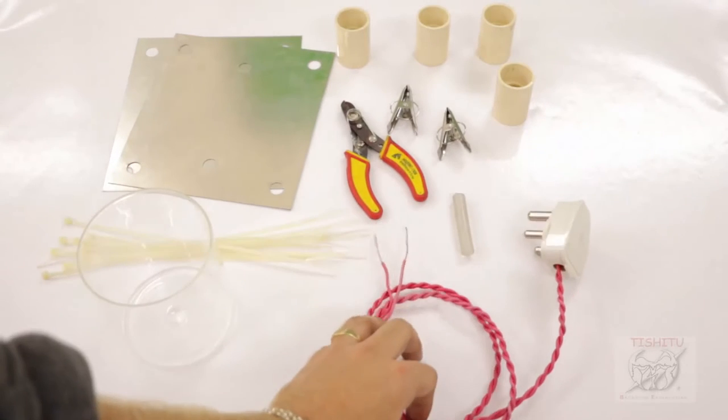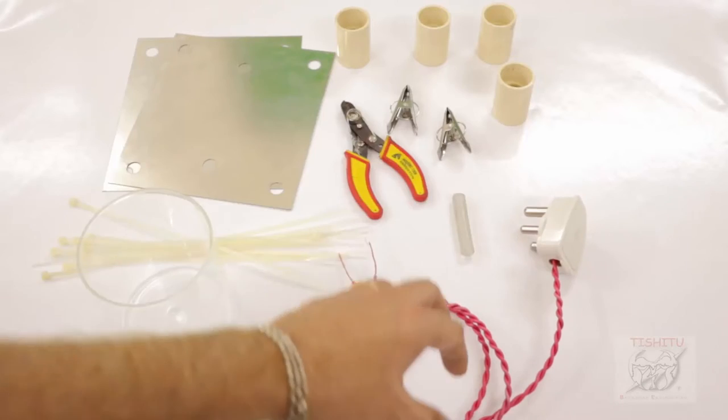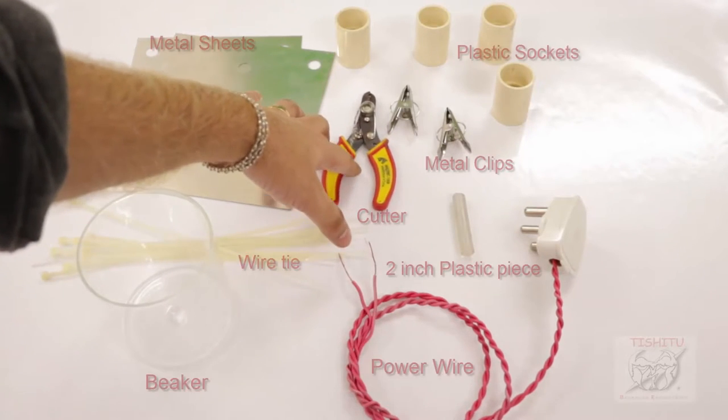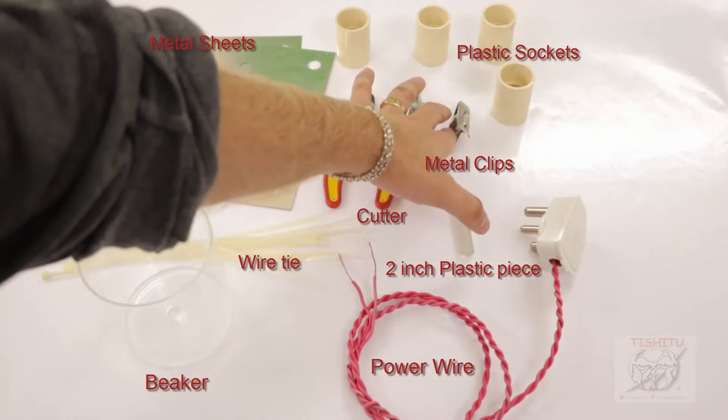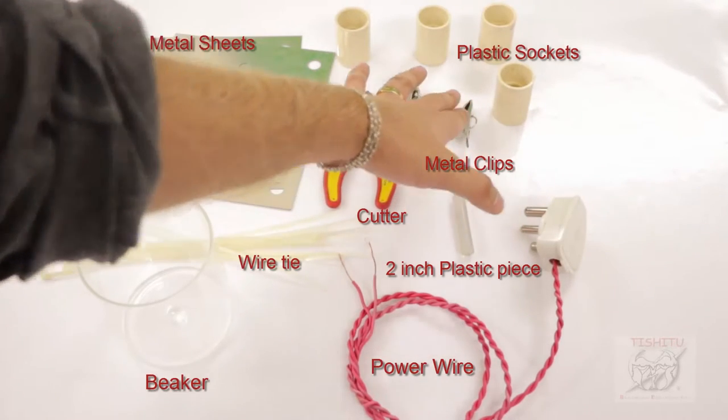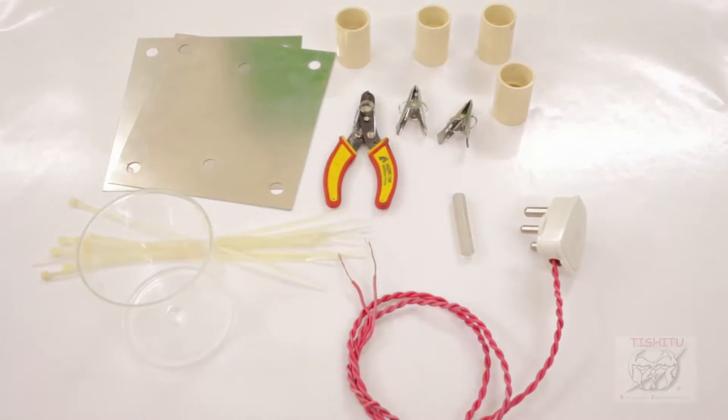There's some tie wire, wire cutter, two clips, and some plates. There are two plates here for the bigger one.